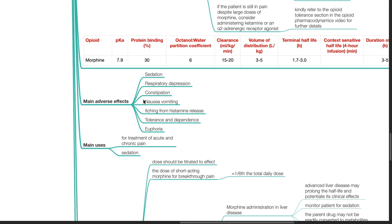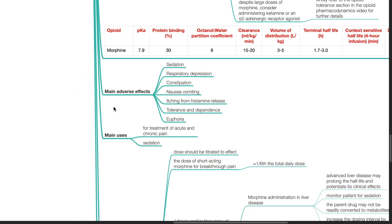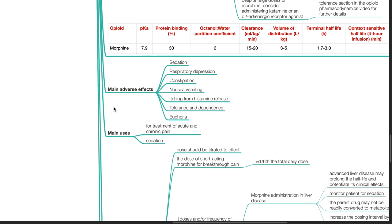Main adverse effects of morphine includes sedation, respiratory depression, constipation, nausea and vomiting, itch from histamine release, tolerance and dependence, euphoria.